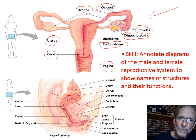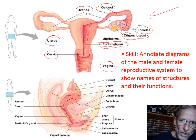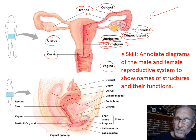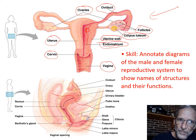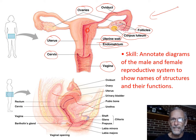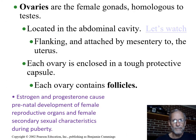The endometrium — endo means inside — is the inner layer of the uterine wall. They wouldn't ask you about the uterine wall generically; they would ask you about the uterus, but they might ask you specifically about the endometrium, because that's where a little fertilized egg attaches. By the time it attaches it's actually divided a few times, so that one's a definite need-to-know.